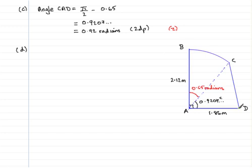Okay, so we should have enough here to be able to work out the area of triangle CAD then. The area of triangle CAD equals half the product of the two sides. So that's half times 1.86 multiplied by 2.12 multiplied by the sine of the included angle. Not 0.92, but we'll give the unrounded version 0.9207, and so on.